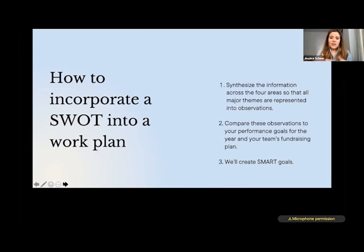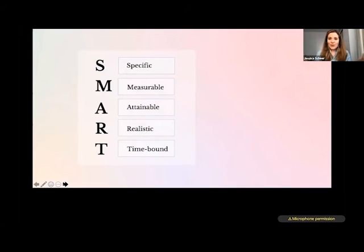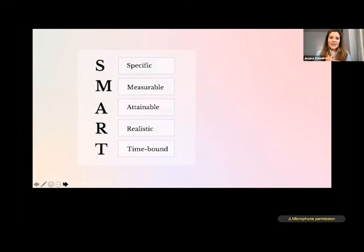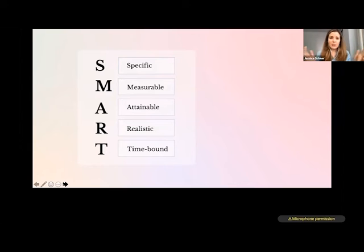How to incorporate a SWOT into a work plan: first, synthesize that information so all the major themes are represented as observations. Then compare these observations to how you ideally want to incorporate them — your annual work plan, your team's fundraising goals, or your organization's strategic plan. When you move into creating goals, having a SMART mindset is really helpful: goals should be specific, measurable, attainable, realistic, and time-bound. CauseVox has some really cool tools on the fundraising calendar, which is great for breaking down broader goals through the year and specific goals for individual campaigns and fundraisers.